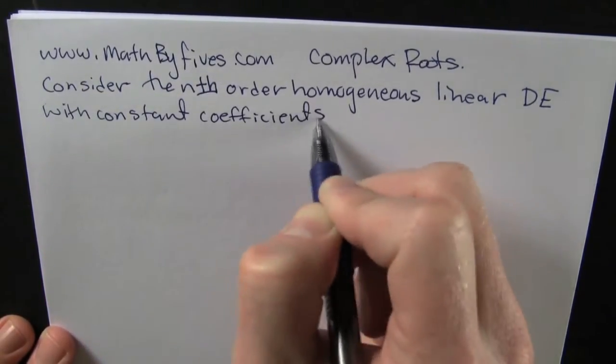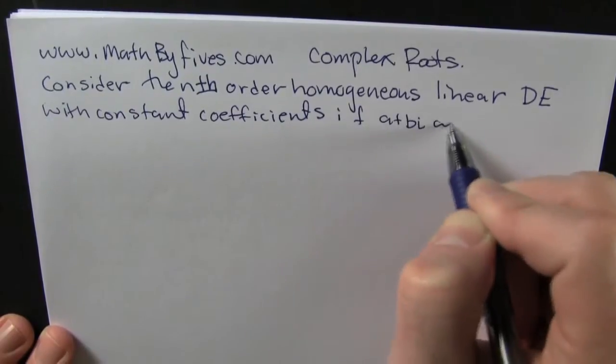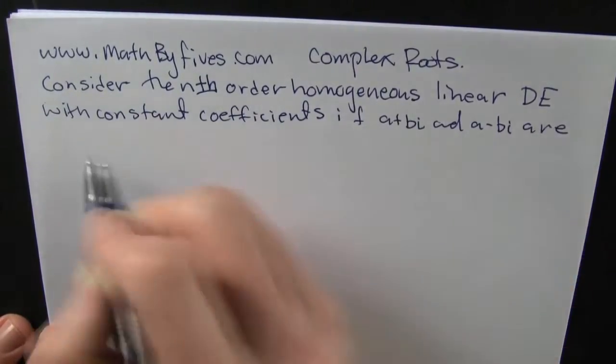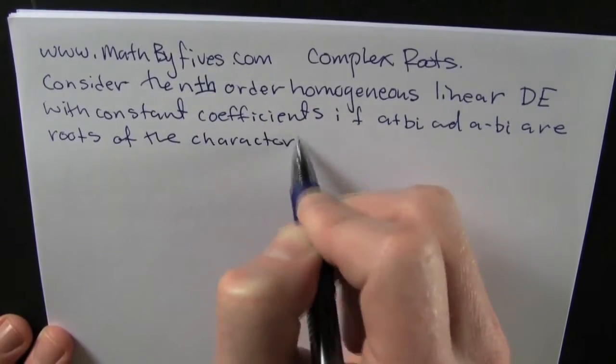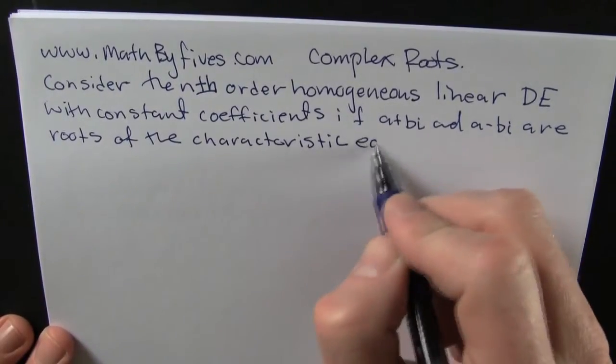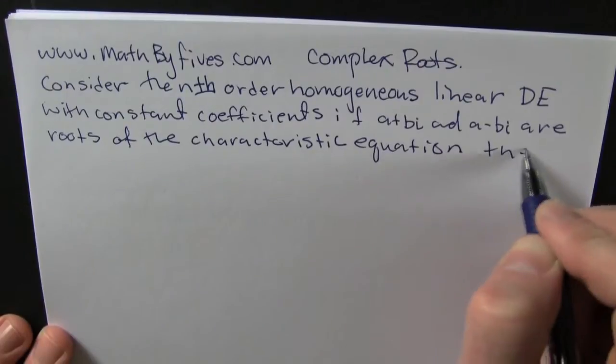These seem to be starting out the same, but here the roots are a plus bi and a minus bi. Those are roots of the characteristic equation.